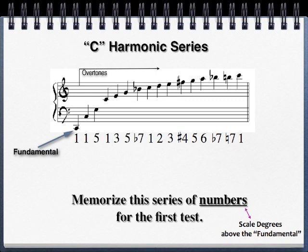For the test of chapter one, you need to know this overtone series by numbers: one, one, five — one, three, five — flat seven — one, two, three — sharp four — five, six — flat seven — natural seven — one.